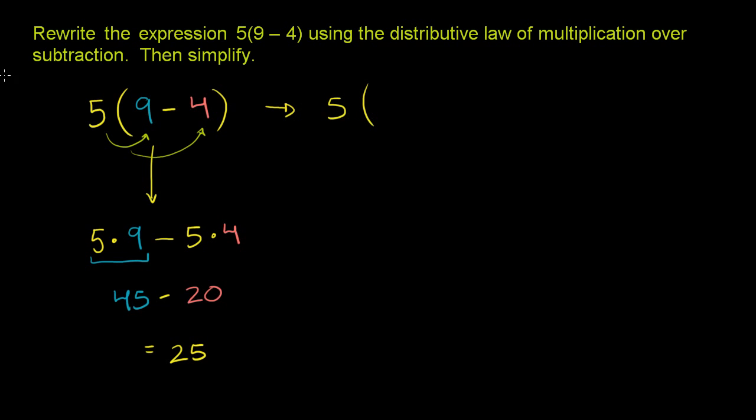5 times, what's 9 minus 4? 9 minus 4 is 5. Let me do that in a different color. 5 times 9 minus 4. So it's 5 times 5. 5 times 5 is just 25.